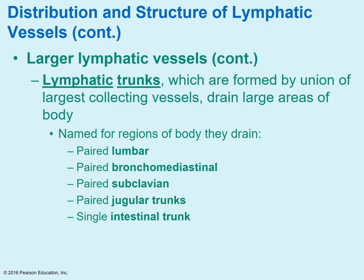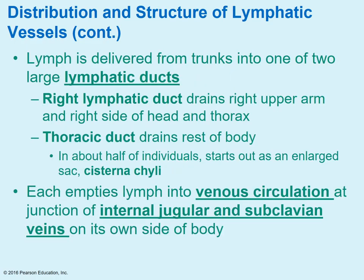Lymphatic trunks form where several collecting vessels drain and emerge together, and they're named for the area of the body they drain — the lumbar, subclavian, jugular trunks, et cetera. From the trunks, the lymph flows into one of two very large lymphatic ducts: the right lymphatic duct and the thoracic duct. The right lymphatic duct drains the right upper arm, the right side of the head, and the thoracic area. The thoracic duct drains the rest of the body, and in many individuals it starts out as an enlarged sac called the cisterna chyli. Both ducts drain the lymph into the venous circulation right at the junction of the internal jugular and subclavian veins.